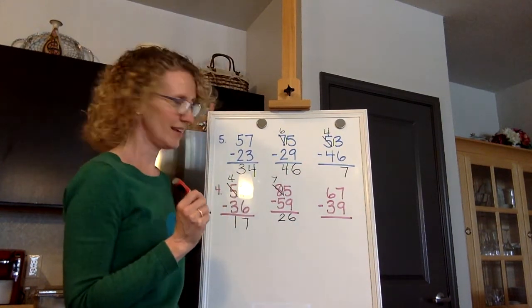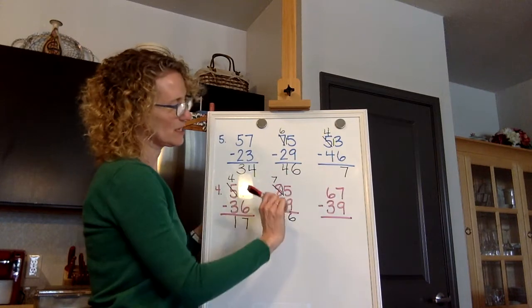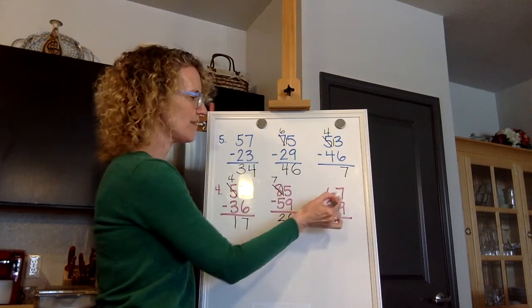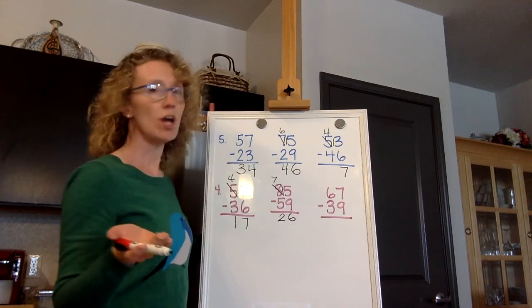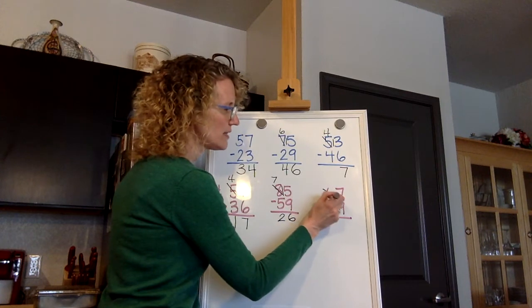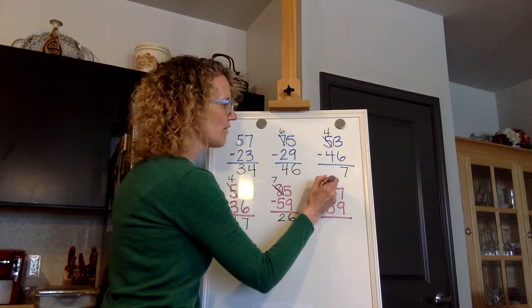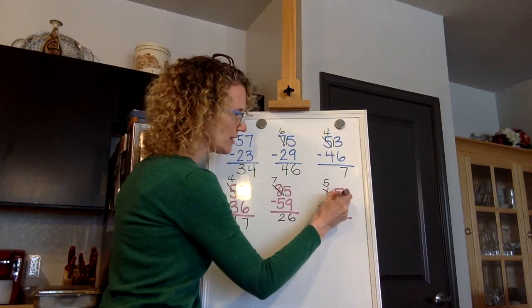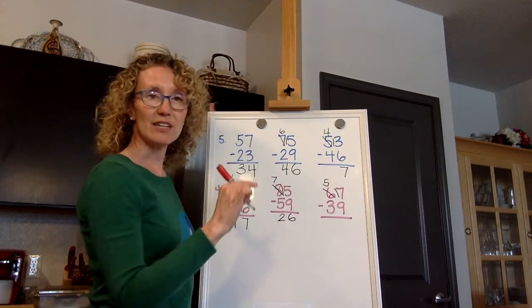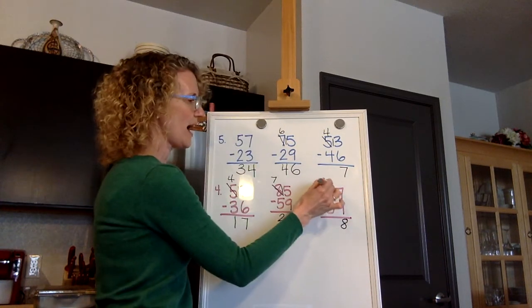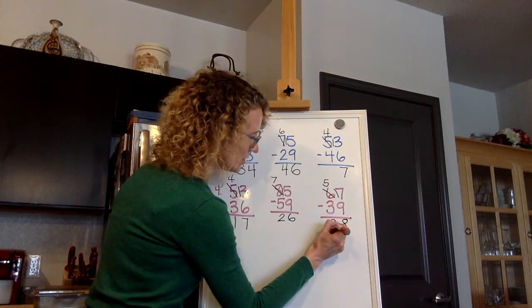And one more. This is number six right here. Look in your ones column. Seven take away nine. Can I do it? No. Go next door. Cross out the six. Make it a five. Because you can take that group of ten, slip it in front of the seven. Now you've got seventeen. Seventeen minus nine is eight. Five minus three is two.